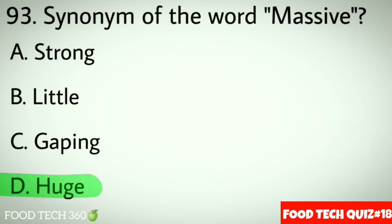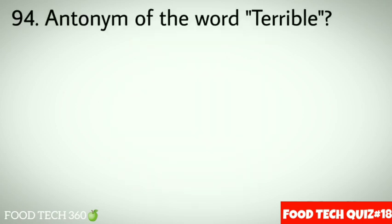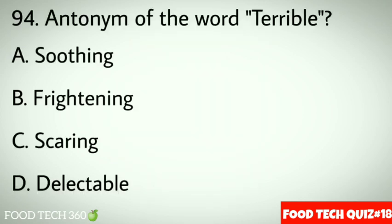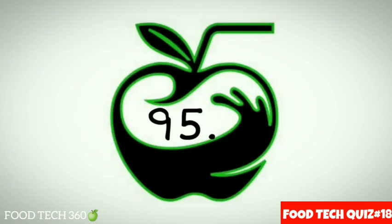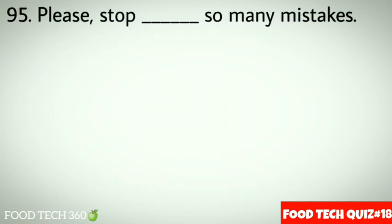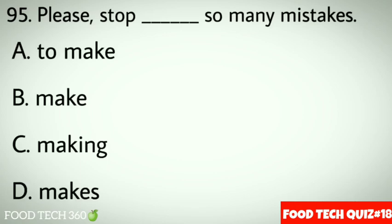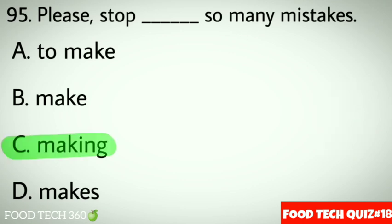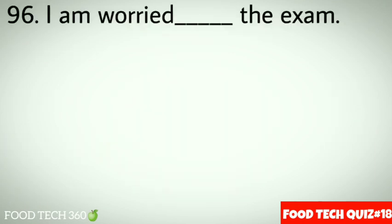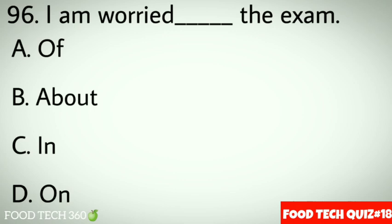Question 94: Antonym of the word 'terrible'. Options: A. Soothing, B. Frightening, C. Scaring, D. Delectable. Correct answer: A. Soothing. Question 95: Please stop dash so many mistakes. Options: A. To make, B. Make, C. Making, D. Makes. Correct answer: C. Making. Question 96: I am worried dash the exam. Options: A. Of, B. About, C. In, D. On.